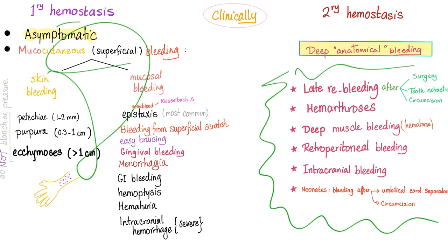Please don't forget that the liver is responsible for the gamma carboxylation of some coagulation factors, including 2, 7, 9, and 10. Remember that gamma carboxylation is an example of post-translational modification of proteins — that's an exam question right there.